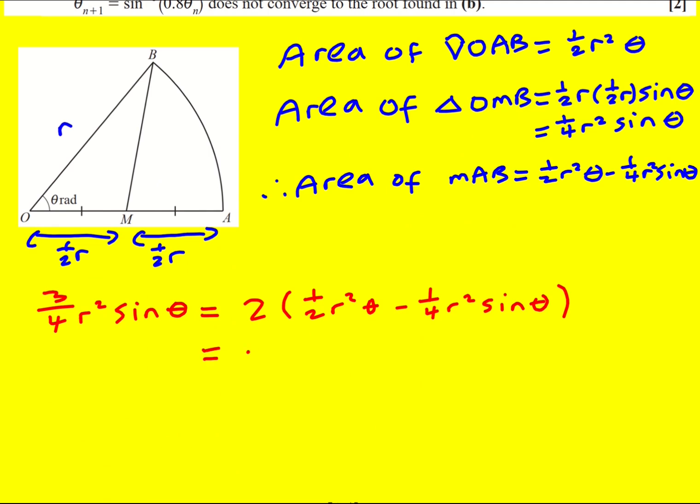I'm going to just expand this bracket first and then divide through by R². Then get rid of the fraction, so times 3 by 4, so 3 sine theta is going to be 4 theta minus 2 sine theta.